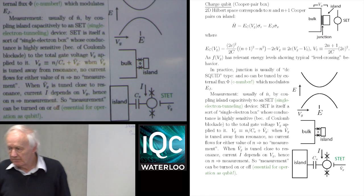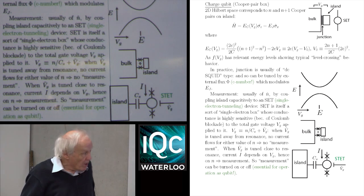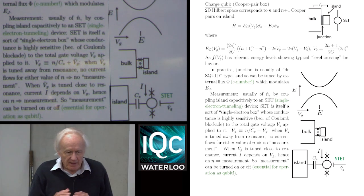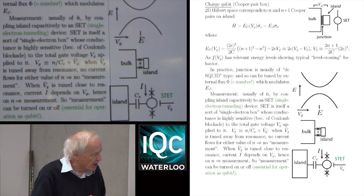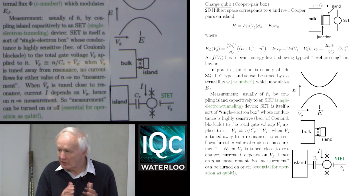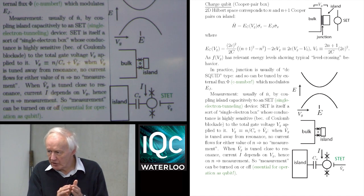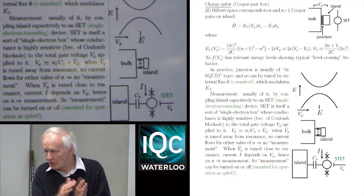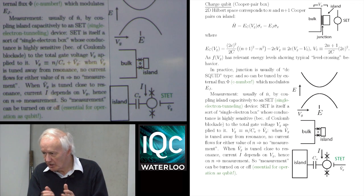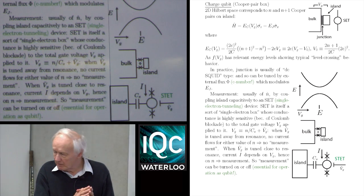On the question of how many charges are on the island: in real life, if the island is made of aluminum or whatever, the actual number of electrons on it is going to be huge — maybe 10⁹ or 10¹⁰. But you're talking about two specific states which differ only in the transfer of one Cooper-pair to the island. So it's that extra pair which gives the reaction, and the offset voltage is generated by the self-capacitance of the island and its charge — a q = CV sort of thing.